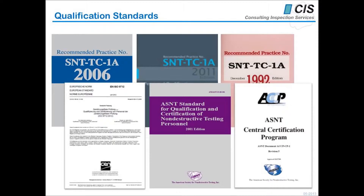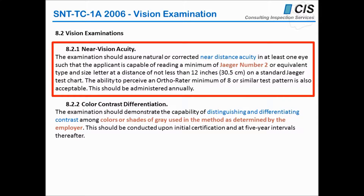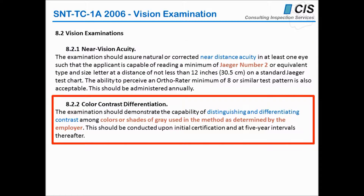The personnel qualification is based on international standards: either SNTT-C1A, CP189, or ISO 9712, which has been enforced since the year 2012. All of these standards require that the near distance acuity of the personnel must be demonstrated and proven — at least with a Jäger number 2, or in other codes a Jäger number 1 is required — and also the distinguishing and differentiating of colours, contrasts of colours, and shades of grey.